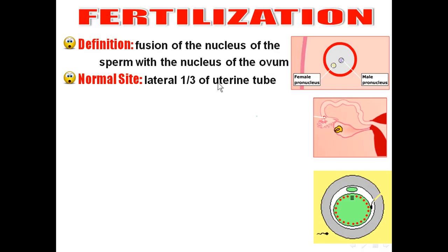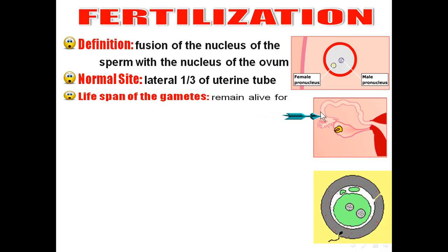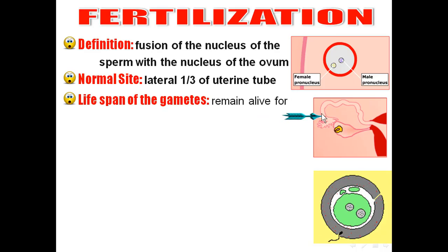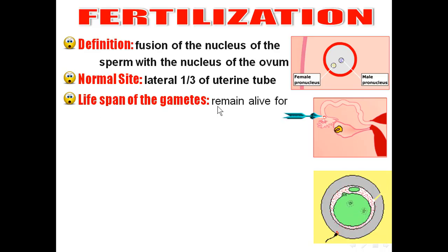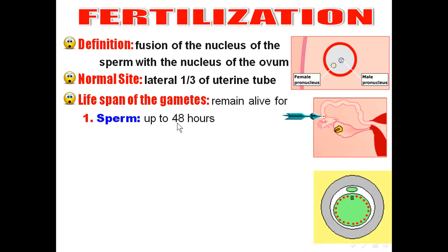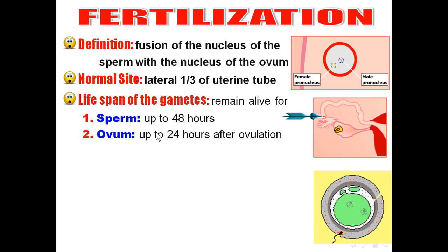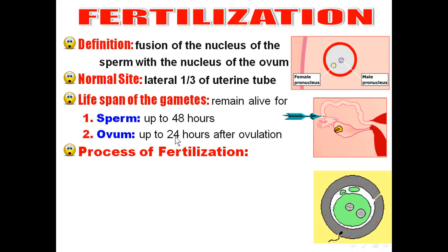Fertilization occurs at the lateral third of the uterine tube, in the ampulla of the uterine tube — this is the normal site of fertilization. Regarding the life span of the gametes: the sperm remains alive in the female genital tract for 48 hours, and the ovum remains alive for 24 hours after ovulation.